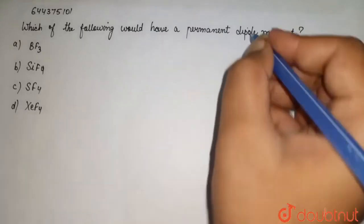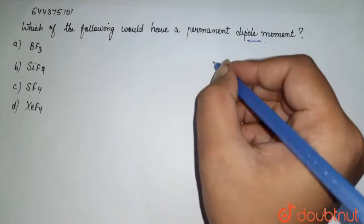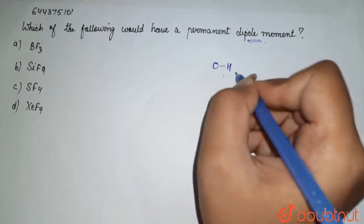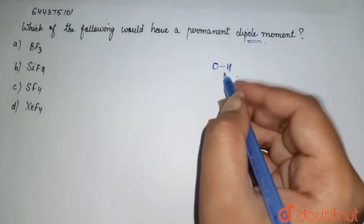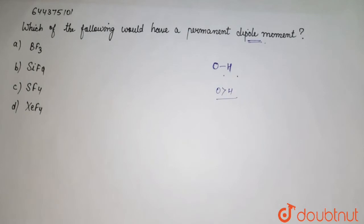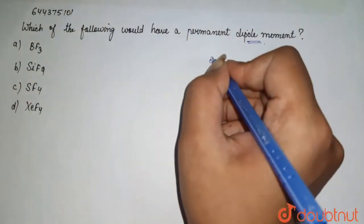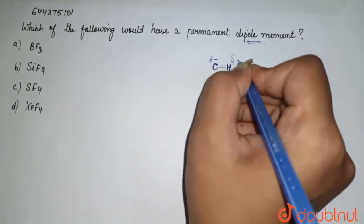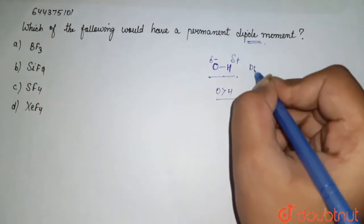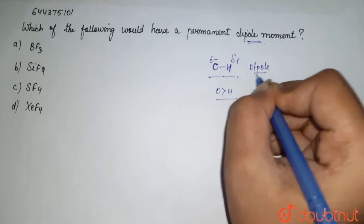A dipole moment emerges when we have two different electronegative atoms. Let's say here is oxygen and here is hydrogen. Oxygen is more electronegative than hydrogen, so it withdraws the electron density from hydrogen. It contains partial negative charge, and due to deficiency, hydrogen contains partial positive charge.